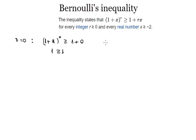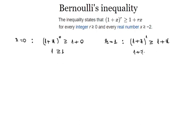Now let's test the inequality to see what happens when r is equal to 1. We get 1 plus x to the power of 1 is greater than or equal to 1 plus 1 times x, which is x. So we get 1 plus x is greater than or equal to 1 plus x. Every number is greater than or equal to itself, so the statement is very much true.